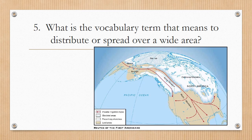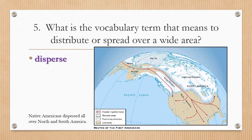Number five: What is the vocabulary term that means to distribute or spread over a wide area? The term is disperse. You can see a red line representing the dispersing of many different Native American peoples. Following the land bridge theory, the red line goes through the Bering Strait and then tapers off, dispersing into multiple directions depending on where that people group went, traveled, and finally settled. Native Americans dispersed all over North and South America.